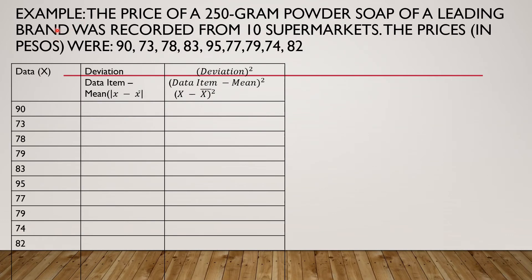Let's have an example. The price of a 250-gram powder soap of a leading brand was recorded from 10 supermarkets. The prices in pesos were as follows: 90, 73, 78, 79, 83, 89, 95, 77, 79, 74, and 82. We will use the pen.